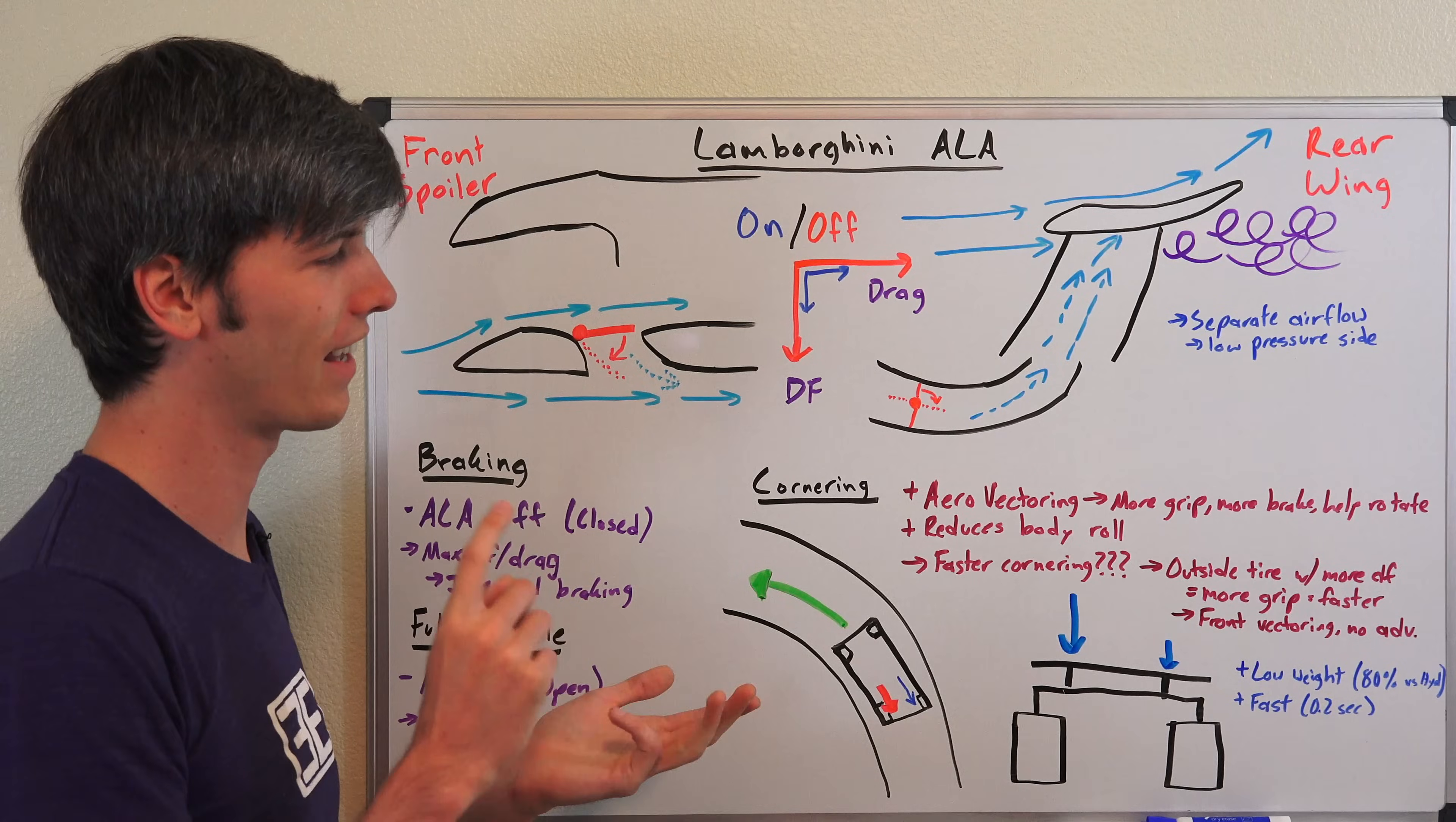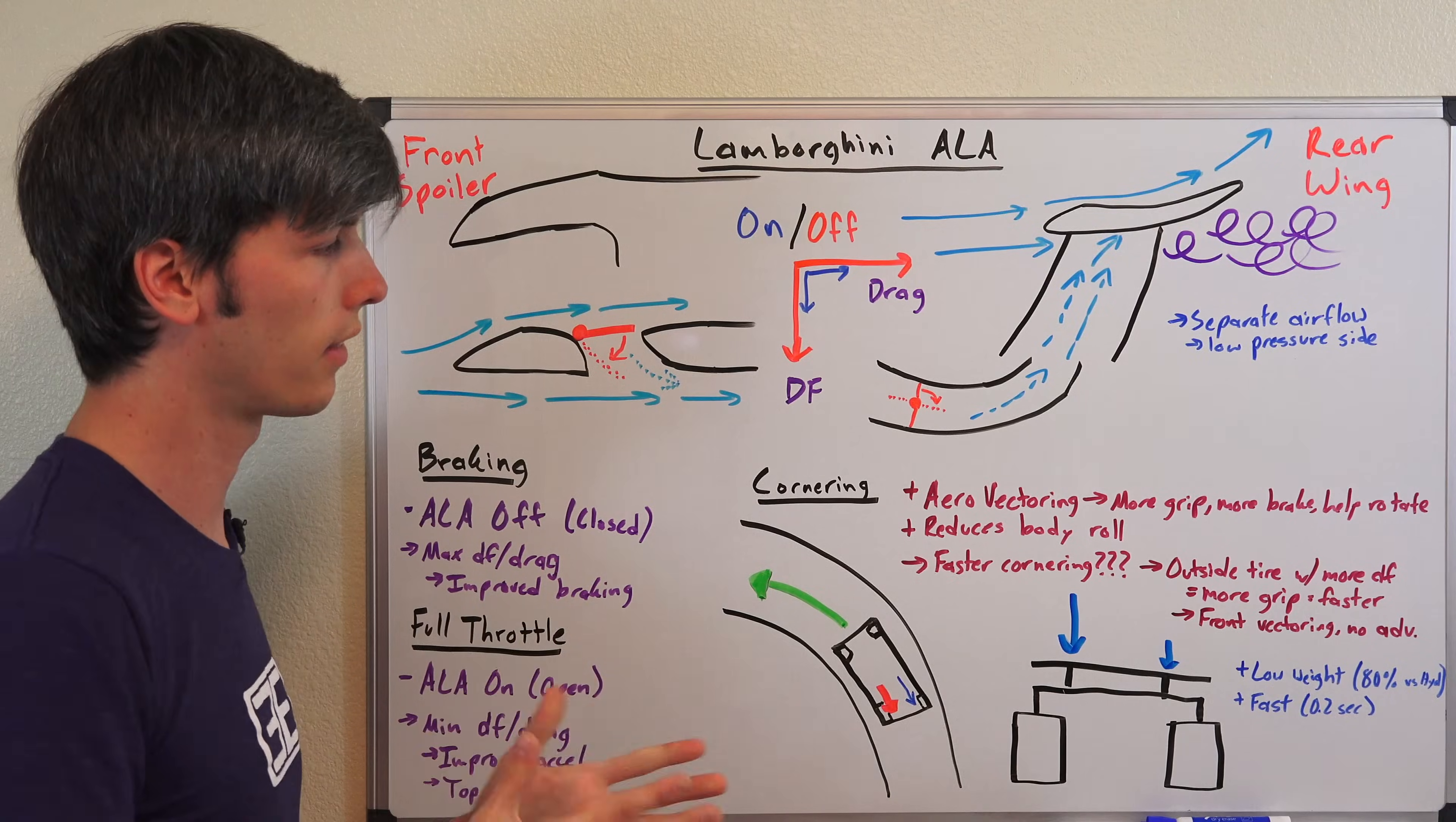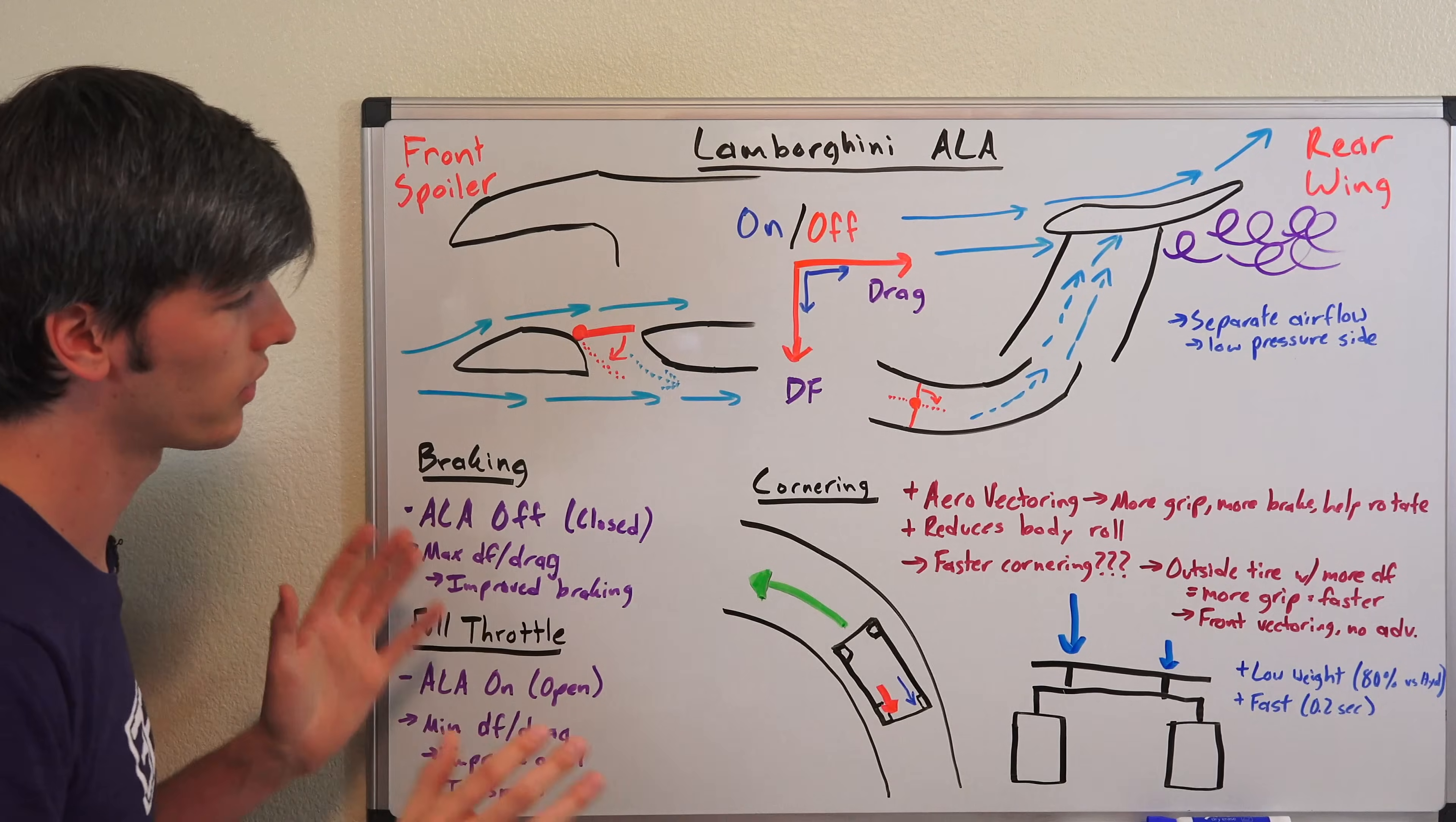...is that Lamborghini's head of aerodynamics was asked whether or not they used this aero vectoring in the front of the car. You could have flaps on either side and open one side versus the other. He said they did not because there was no performance advantage. So I think realistically the huge advantage comes from braking and full throttle where you can alter it to suit those needs. That makes a ton of sense.